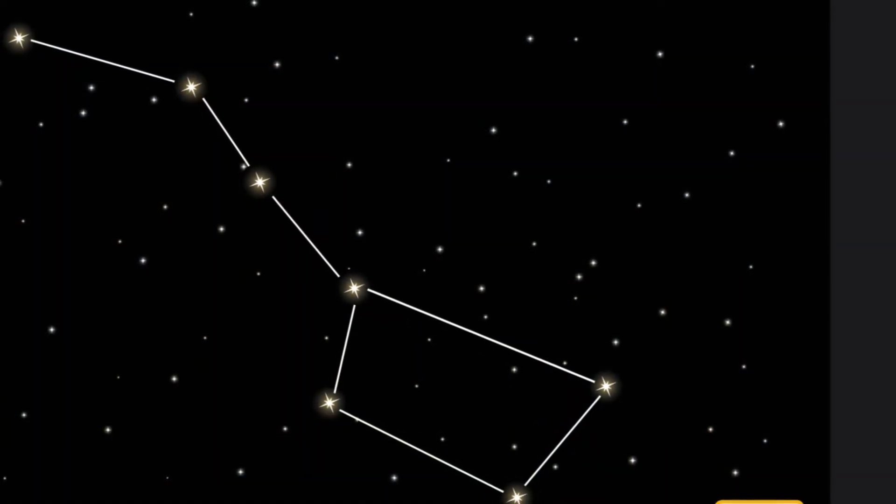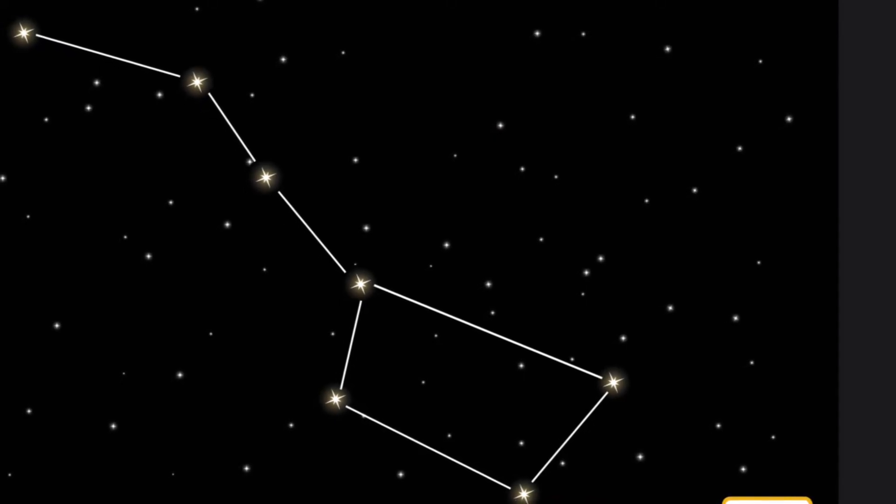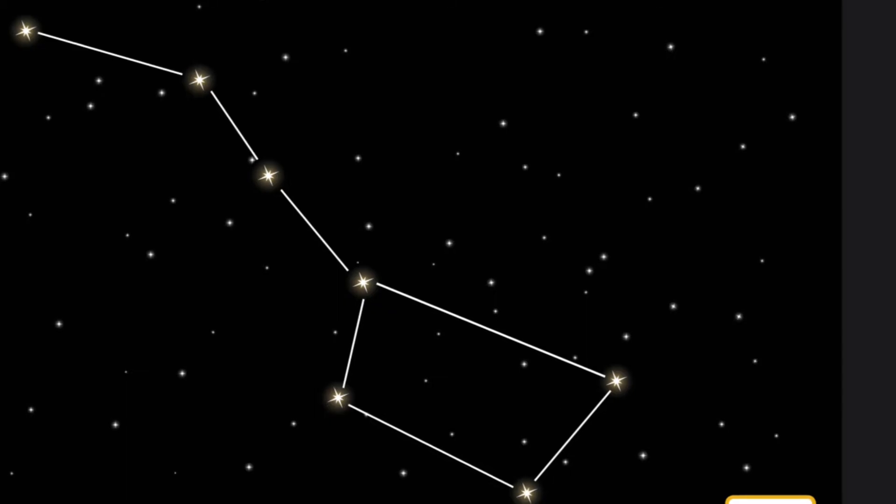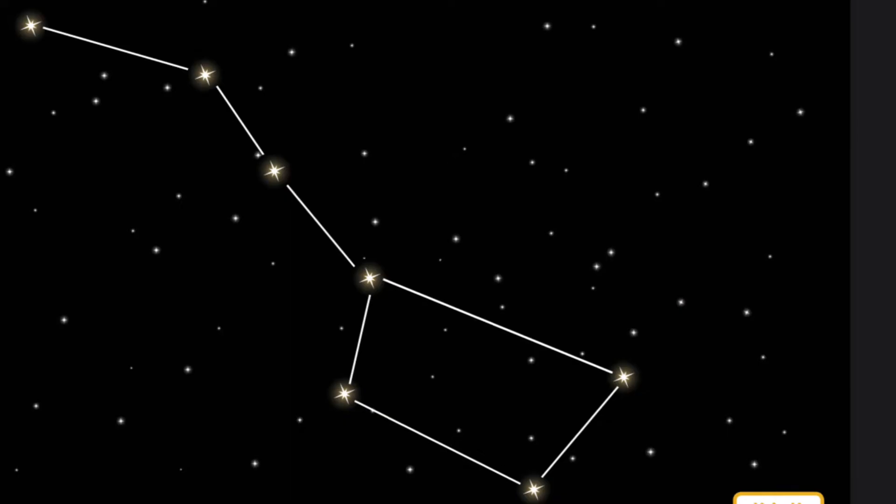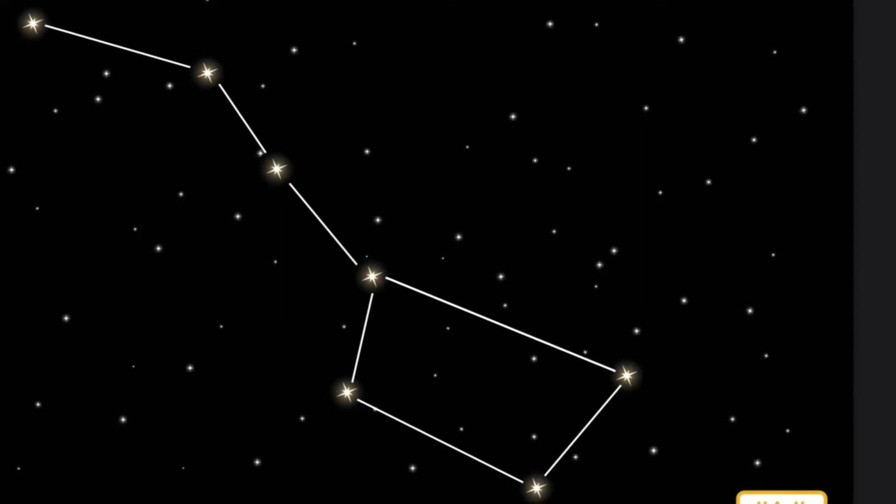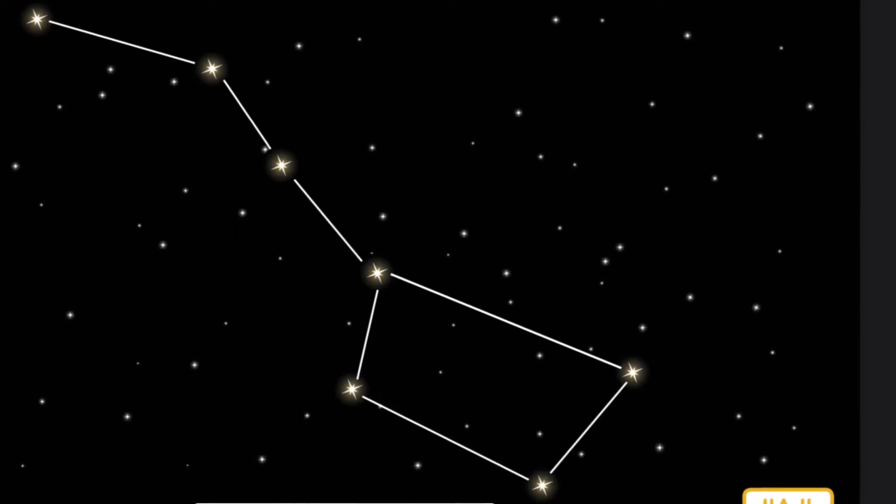One of the first groups of stars that young stargazers in the United States learn about is also the easiest one to spot. The Big Dipper looks like a giant soup ladle up in the sky. The Big Dipper is made up of seven stars. The Big Dipper looks different in the sky depending on the time of year.